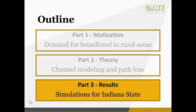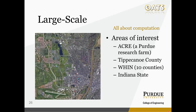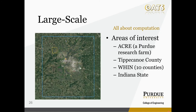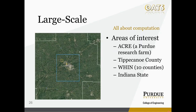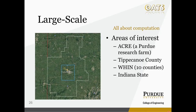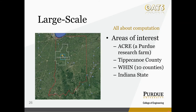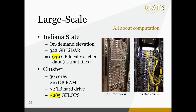We have carried out simulations for Indiana State and some results are quite interesting. We started with the Purdue Research Farm, moved on to Tippecanoe County where Purdue is located, then to the surrounding counties known as the Wabash Heartland Innovation Network, or WHIN for short, and finally carried out the analysis for the whole Indiana State. In terms of data size, the compressed raw LiDAR dataset alone is already 322 gigabytes, and including the elevation information for locating the ground, the resulting data size for the Indiana State simulation is 939 gigabytes.